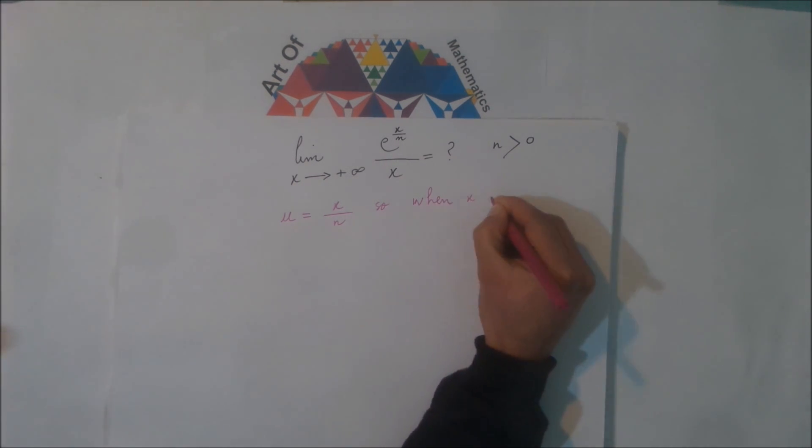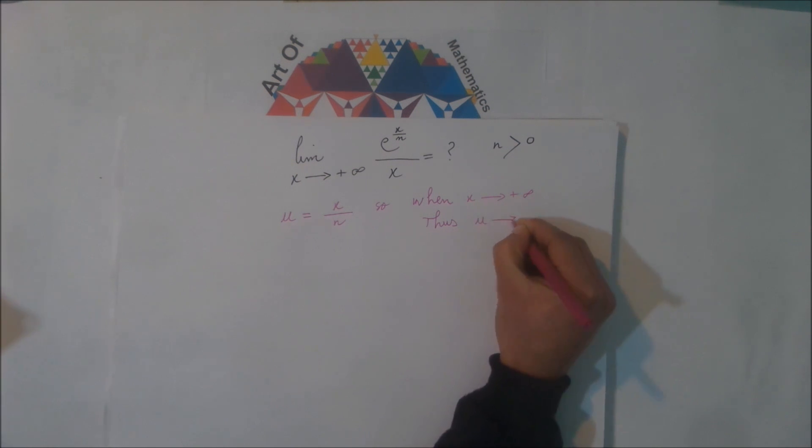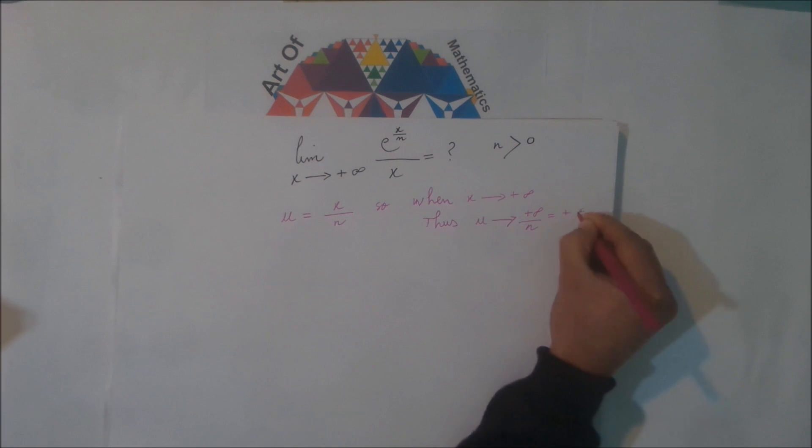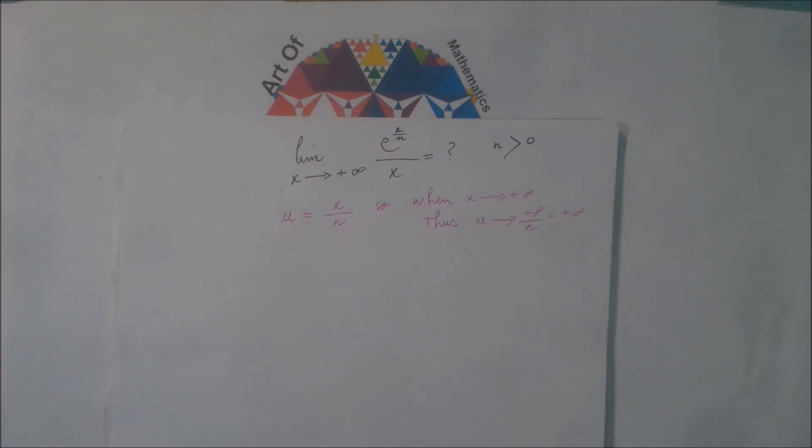So when x tends to plus infinity, then u tends to plus infinity divided by n, which is equal to plus infinity, because n is positive integral.